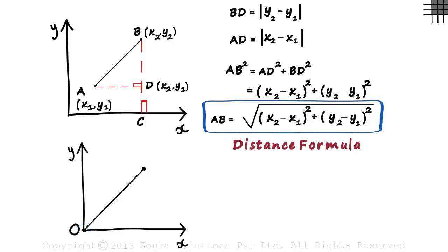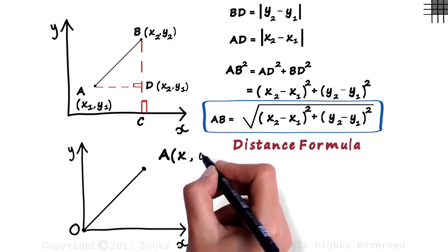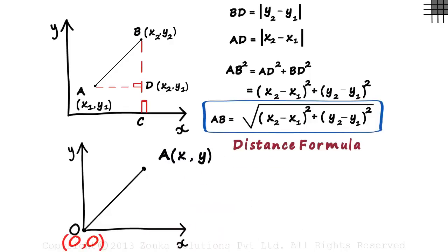Let the coordinates of point A be x comma y. The coordinates of the origin are 0 comma 0. In this case, x2, y2 are x, y and x1, y1 are 0 comma 0.